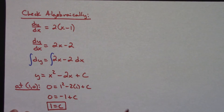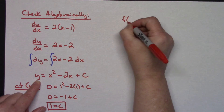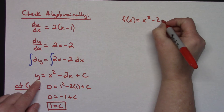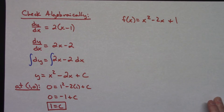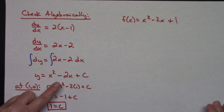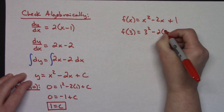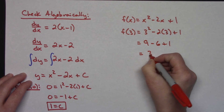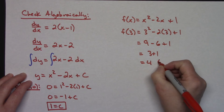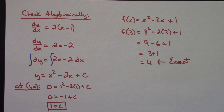Plugging that back into the equation to get my actual curve: f(x) equals x squared minus 2x plus 1 — a curve we can graph relatively easily. Let's calculate the actual f(3): 3 squared minus 2 times 3 plus 1 equals 9 minus 6 plus 1 equals 4. So this is the exact answer. From our Euler's method approximation, we got 3, while the exact value is 4.